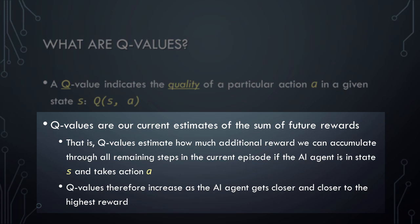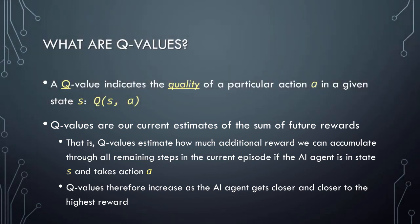Q values therefore increase as the AI agent gets closer and closer to the highest reward. It is important to reiterate that in reinforcement learning, rewards can be positive or negative. You may conceptualize negative rewards as punishments, and indeed many Q-Learning problems use negative rewards. In these scenarios, the goal of the AI agent is still to maximize its total rewards, but with negative rewards we can think of this as the agent trying to minimize its total punishments. Just as with humans and other animals, AI agents can learn through both positive and negative reinforcement.